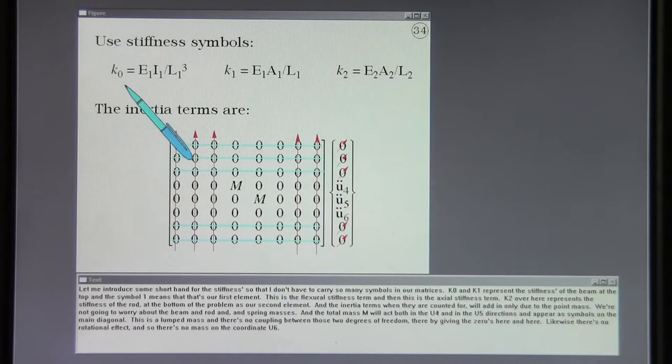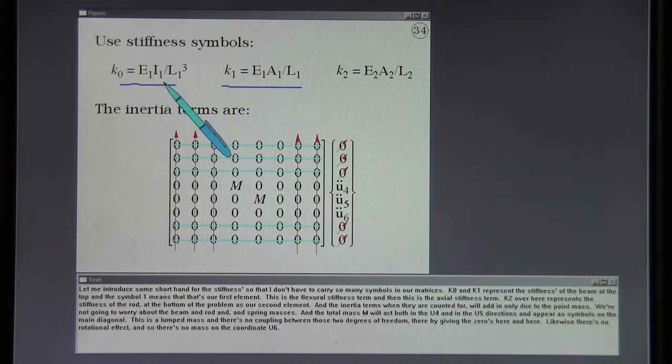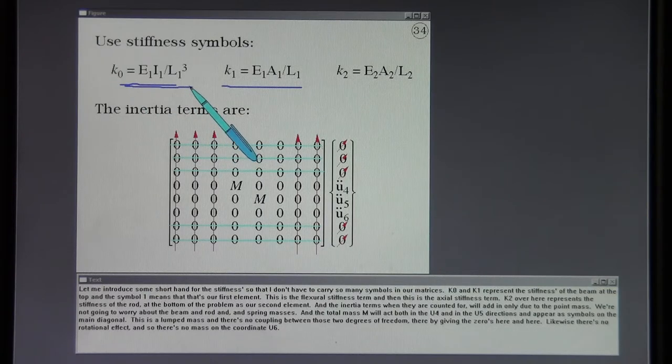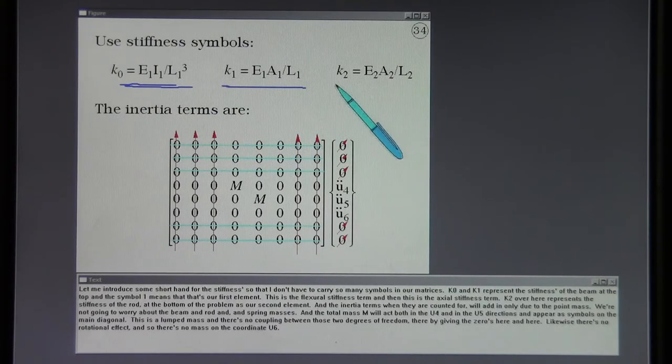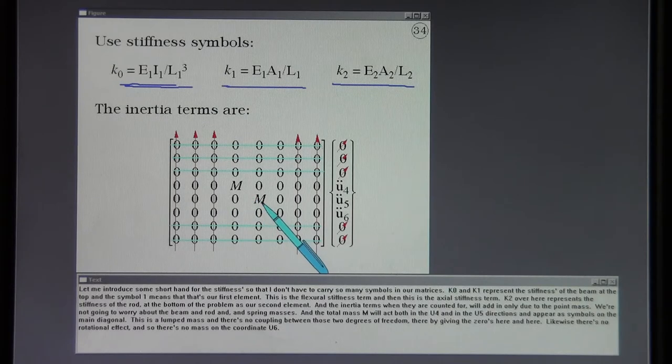Let me introduce some shorthand for the stiffnesses so that I don't have to carry so many symbols in our matrices. K0 and K1 represent the stiffnesses of the beam at the top and the symbol 1 means that that's our first element. This is the flexural stiffness term and then this is the axial stiffness term. K2 over here represents the stiffness of the rod at the bottom of the problem as our second element. The inertia terms when they are accounted for will add in only due to the point mass. We're not going to worry about the beam and rod and spring masses. The total mass M will act both in the U4 and in the U5 directions and appear as symbols on the main diagonal. This is a lumped mass and there's no coupling between those two degrees of freedom, thereby giving the zeros here and here. Likewise there's no rotational effect and so there's no mass on the coordinate U6.